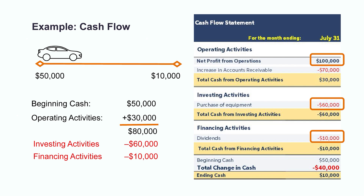In addition, if we look under the financing activities, they appear to have issued $10,000 worth of cash dividends to their investors, resulting in a decrease to the cash balance by this amount. So now, if we sum up the total from all three activities, we can see the $40,000 change in cash has now been accounted for. This brings us to that ending cash balance of $10,000.